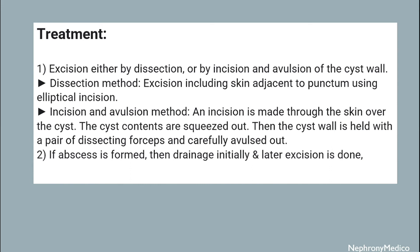Treatment: excision can be done either by dissection or by incision and avulsion of the cyst wall. In the dissection method, excision including the skin adjacent to the punctum using an elliptical incision is done. In the incision and avulsion method, an incision is made through the skin over the cyst and the cyst contents are squeezed out, then the cyst wall is held with a pair of dissecting forceps and carefully avulsed out.